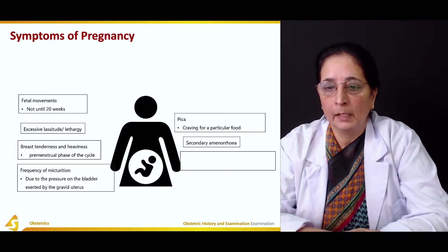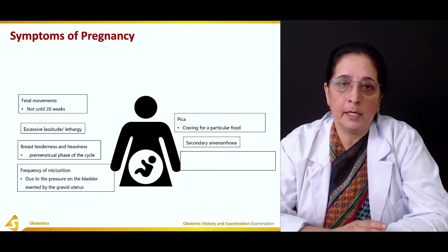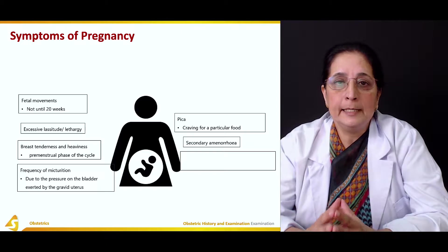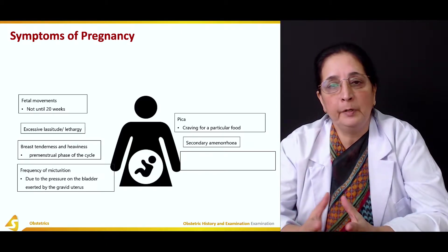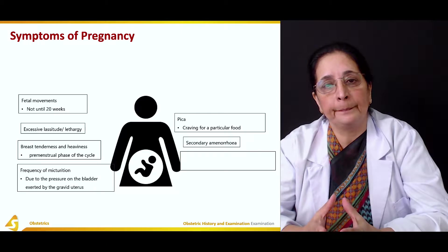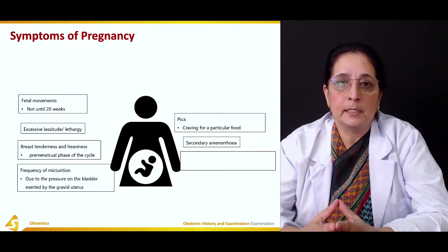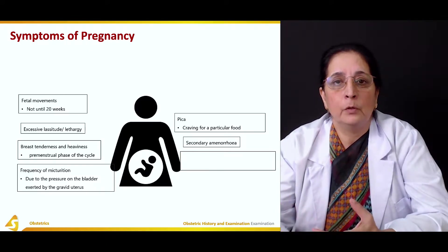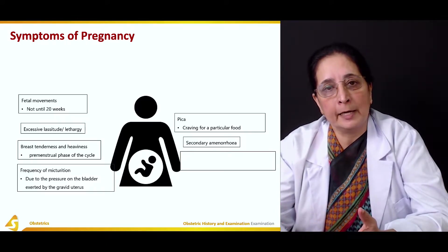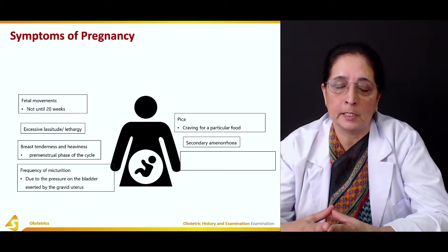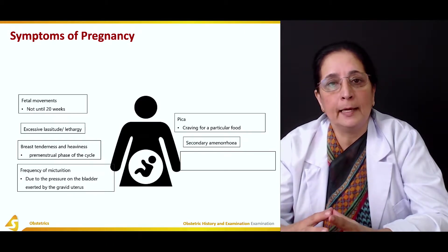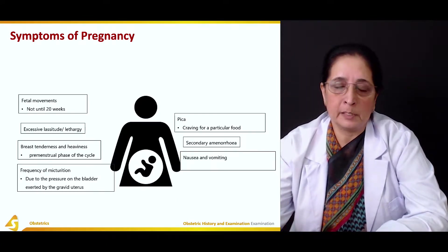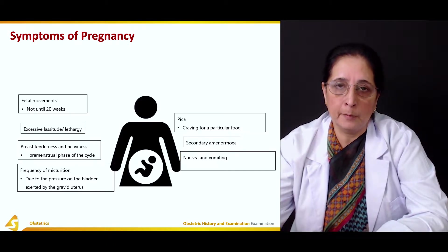Secondary amenorrhea is usually the first indication that a woman might be pregnant — the absence of menstruation. When they miss their cycle, after three or four days they do a home pregnancy test and it comes back positive. This is secondary amenorrhea.